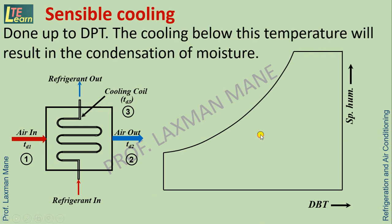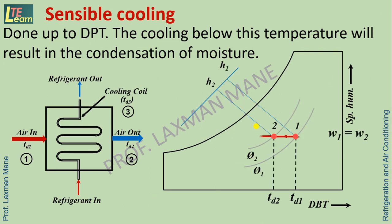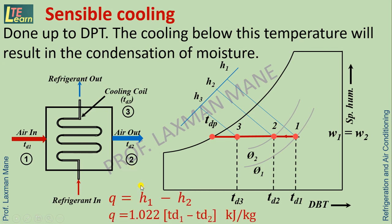In sensible cooling, the air is cooled down to its dew point temperature. If the air is cooled below the dew point temperature, condensation of moisture will take place and the condition of air will fall outside the saturation curve. Air passes over a cooling coil through which refrigerant is passed. The amount of heat removed from the air is given by Q = H1 − H2, where H2 is the enthalpy of the outlet air (kJ/kg).